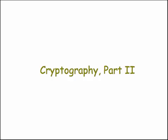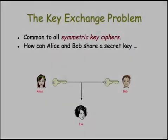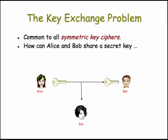In this lesson, we're going to look at some of the modern cryptographic techniques that are used to solve this problem, which is an important problem because if you can't solve it, you can't really have a secure internet where we can make secure banking and credit card transactions. The key exchange problem is the problem common to all symmetric key ciphers — namely, how can Alice and Bob share a secret key without Eve getting it.